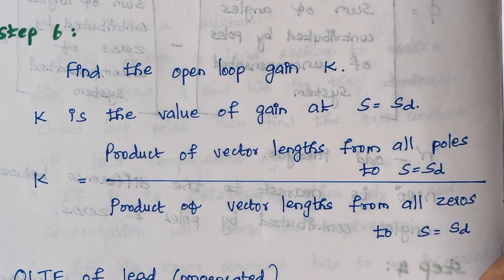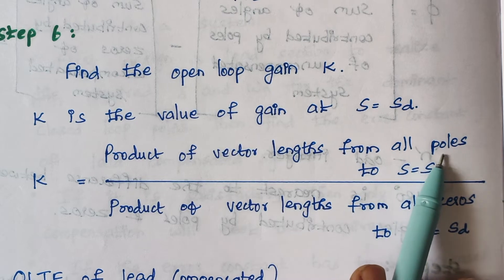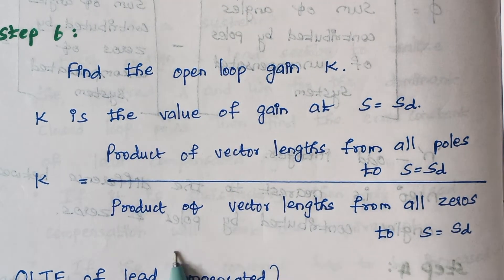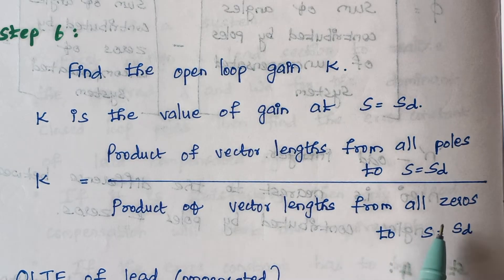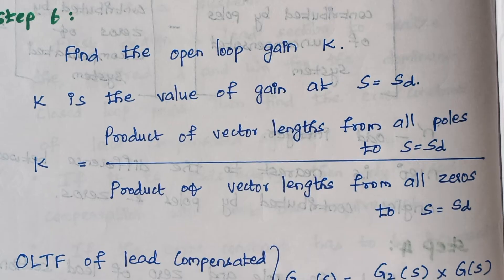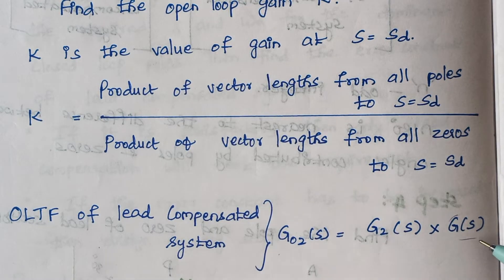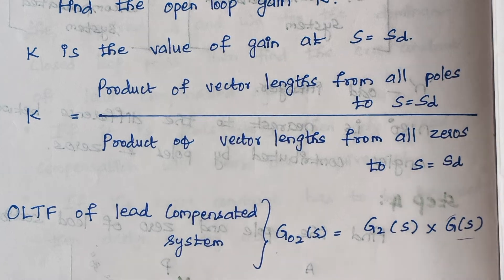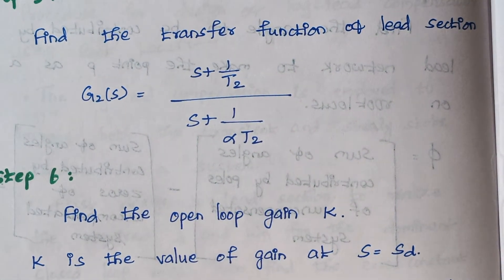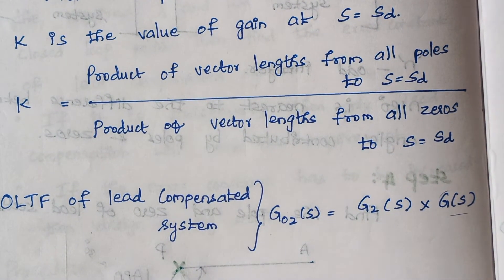Step 6: Find the open-loop gain K. The open-loop gain K is given by the product of vector lengths from all poles to the dominant pole, divided by the product of vector lengths from all zeros to the dominant pole. We measure the length of lines drawn from different poles and zeros to the dominant pole using a scale to find K. The open-loop transfer function of the lead compensator system is G(s) — the given transfer function — multiplied by G2(s), the transfer function of the lead section.